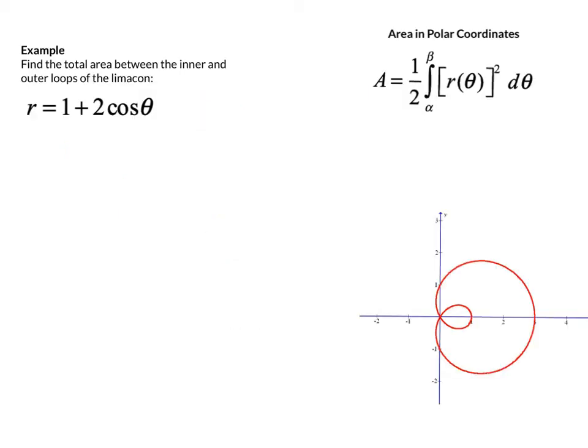Here we're taking a look at a polar function known as a limaçon. It's r equals 1 plus 2 cosine theta. Depending on the coefficients, these can sometimes have an inner loop like this one does. What we're trying to do is find the total area enclosed by the outer loop of the curve, but not the inner loop.